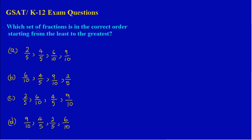In this question we're asked which set of fractions is in the correct order starting from the least to the largest. Another word for least is smallest, so we need to choose a set of fractions arranged from smallest to largest. A quick method of checking which fraction is smallest or largest is to convert the fractions to decimals.